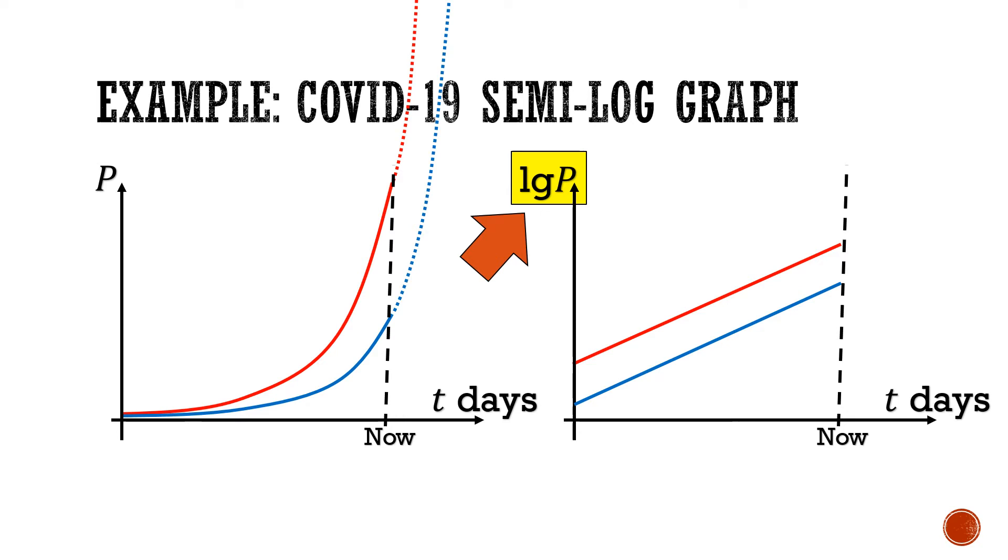Sometimes we see a y-axis that is labeled 1, 10, 100, 1000 instead of the usual fixed scale of 10, 20, 30, 40. That's also a semi-log graph.